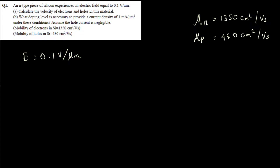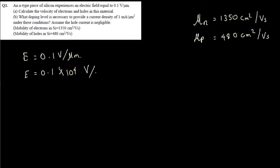It's better to convert the electric field into centimeters since our mobility units are in centimeters squared per volt-second. Converting 0.1 V/μm: since 1 micrometer equals 10⁻⁴ centimeters, the denominator 10⁻⁴ brought to the top gives 10⁴, so E equals 10⁴ volts per centimeter, which we can also write as 10³ volts per centimeter.